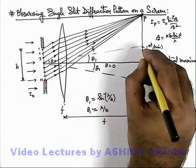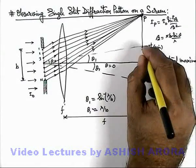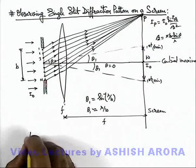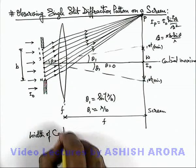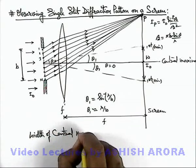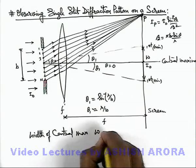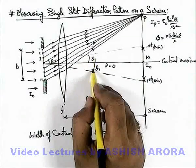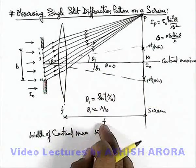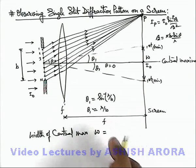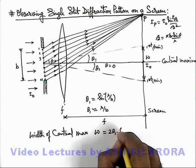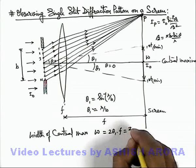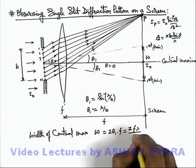So in this situation this width of central maxima if it is w, the width of central maxima is this w. We can write as angular width is 2 theta 1 and this distance is f. So here we can write w is equal to 2 theta 1 multiplied by f. So this will be 2 f lambda by b.